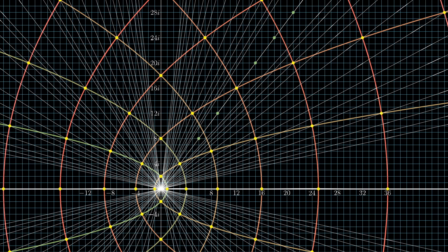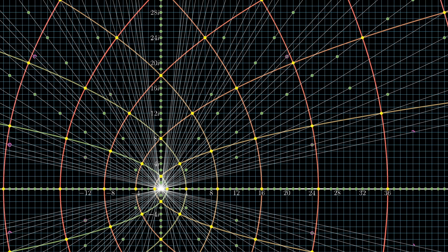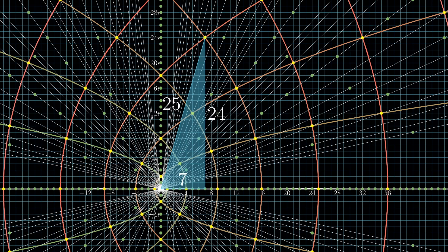Doing this for all possible points, you'll account for every possible Pythagorean triple. Every right triangle that you ever have seen or ever will see that has whole number side lengths is accounted for somewhere in this diagram.